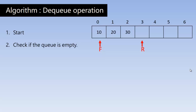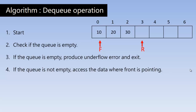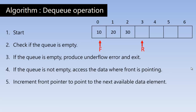For DQ, first check if the queue is empty. If the queue is empty, produce an underflow error and exit — if there is no element, you cannot take out any element. If the queue is not empty, access the data where front is pointing. Take out the data and print it. Then increment the front pointer to point to the next available data element — after deleting 10 from the queue, make F point to index 1, which holds 20. Return success.